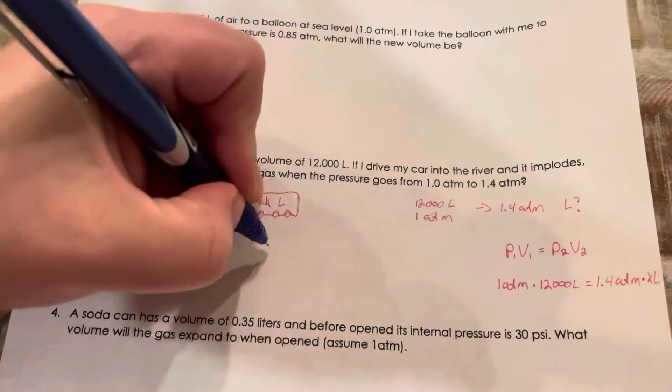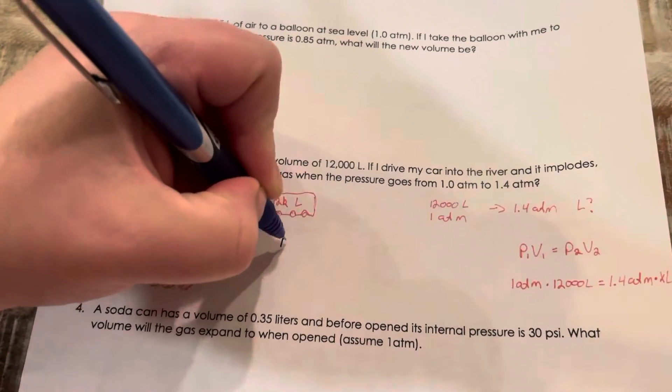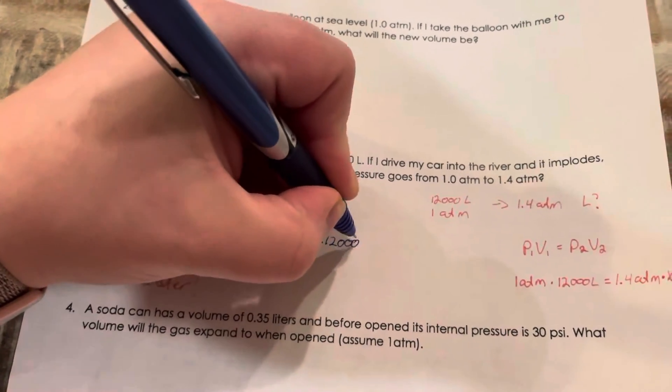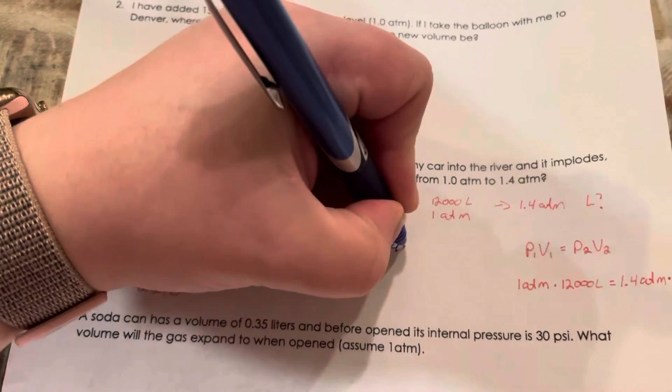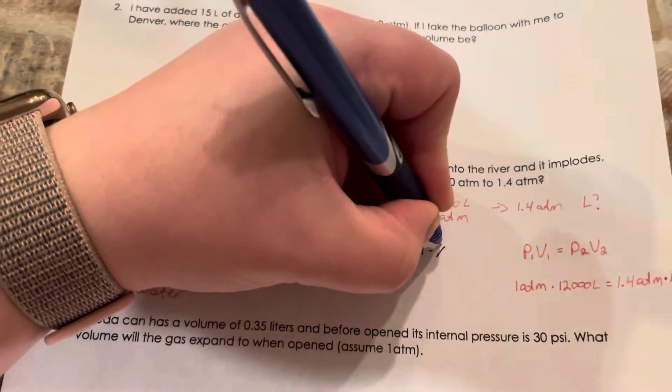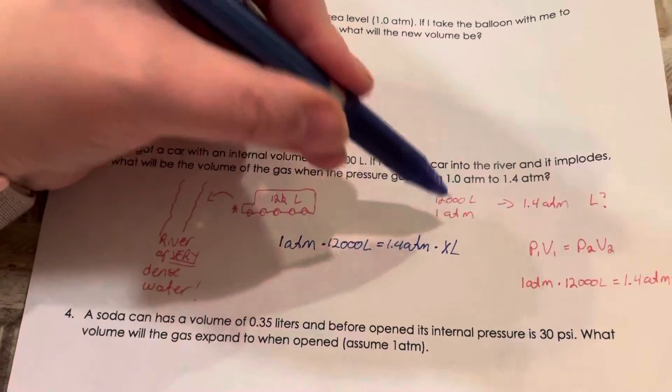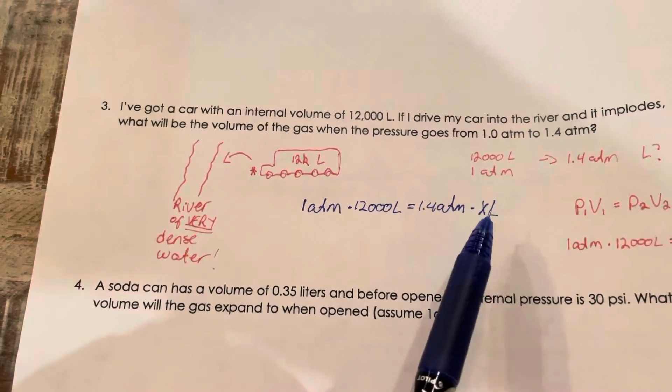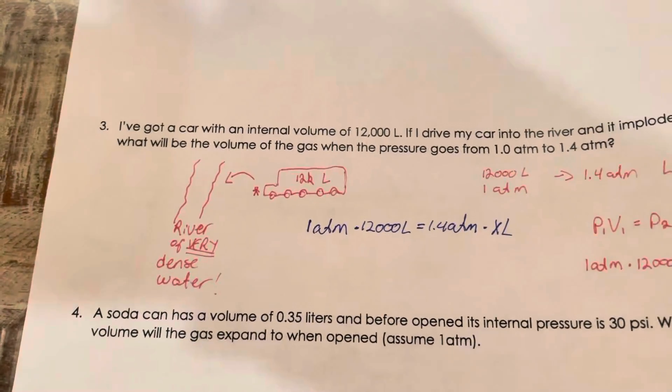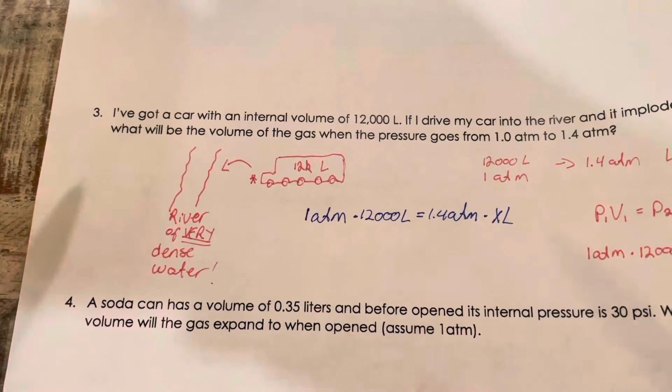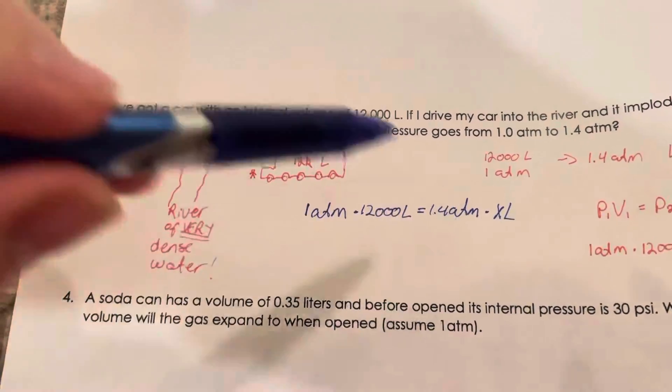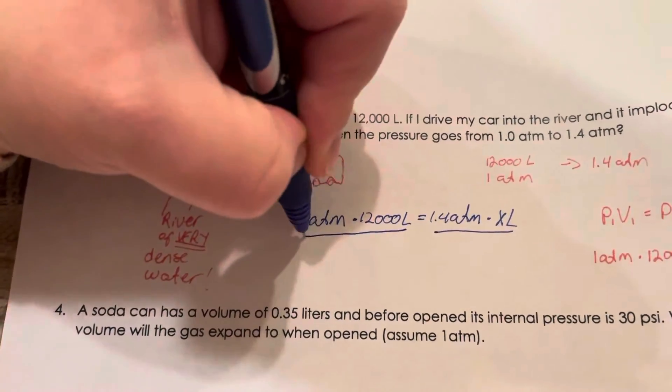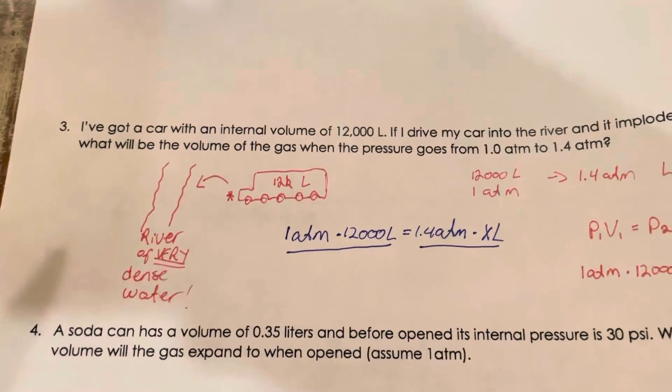And this is algebra. I need to just do basic algebra here. So let's just put one atmosphere times 12,000 liters equals 1.4 atmospheres times my X. Solve it for X.